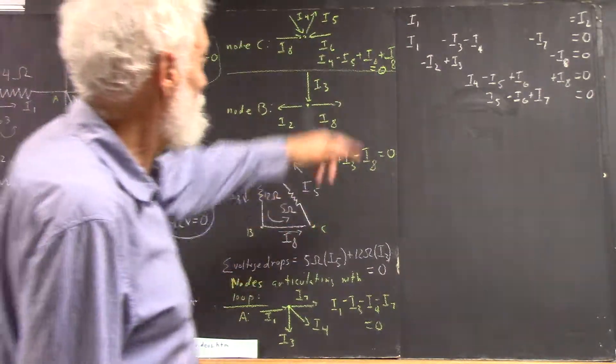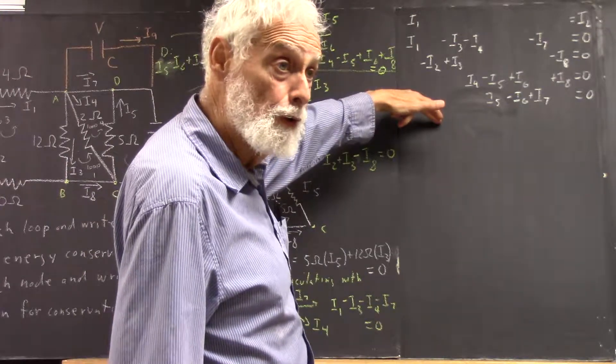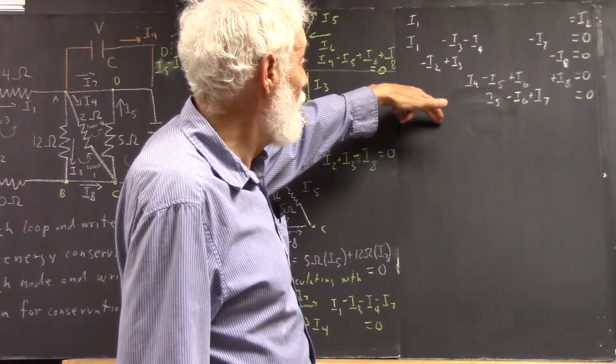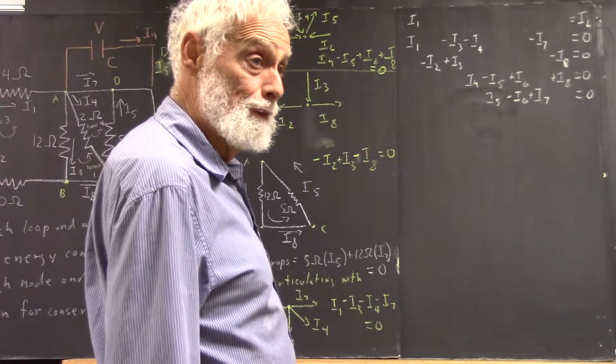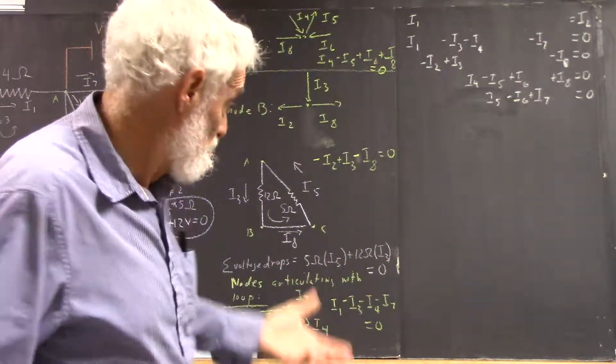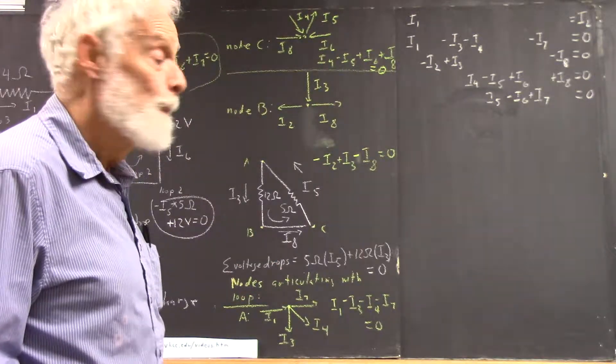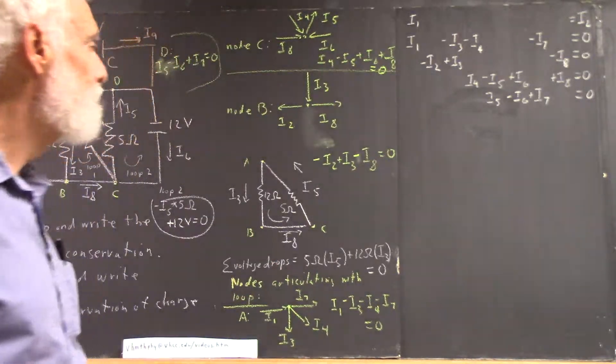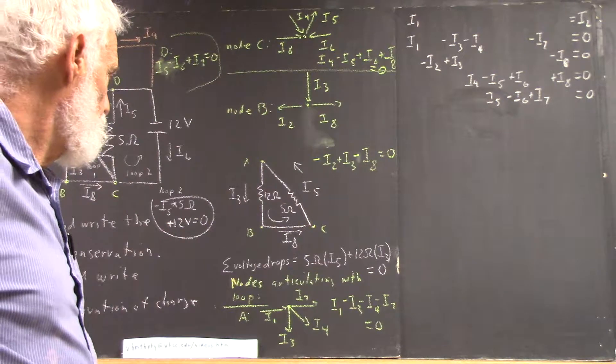Okay, so I've written down the four nodes, the equations for the four nodes, and we need eight equations, so I've got to write down equations for the three loops. Very easily done. So, go ahead.